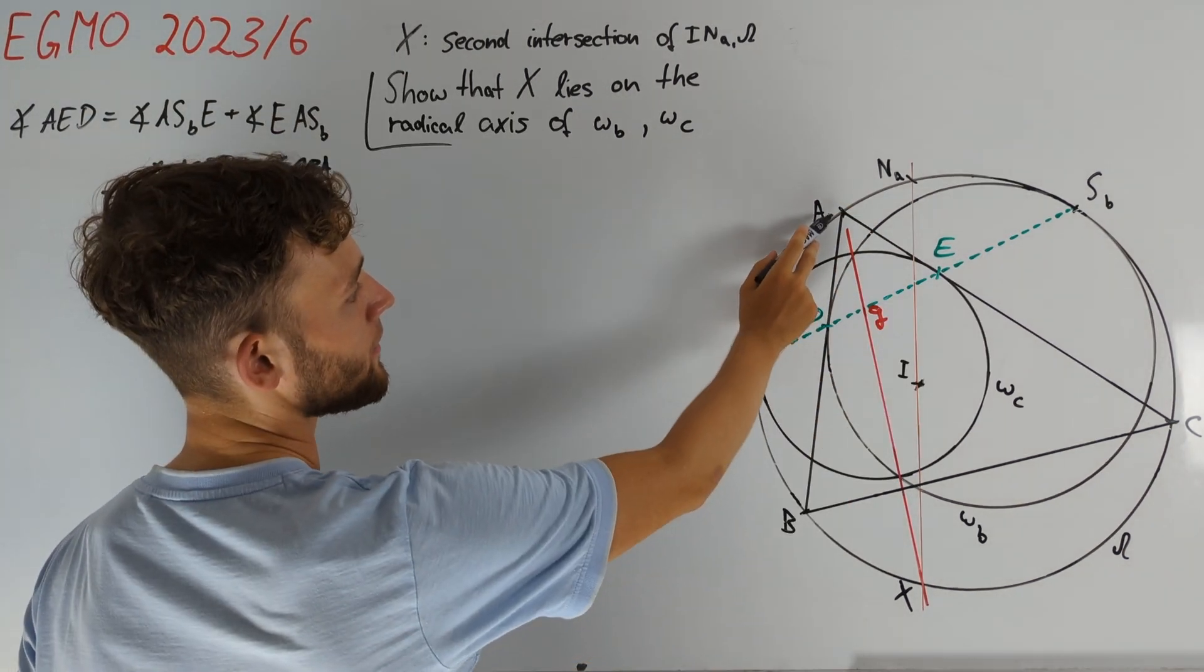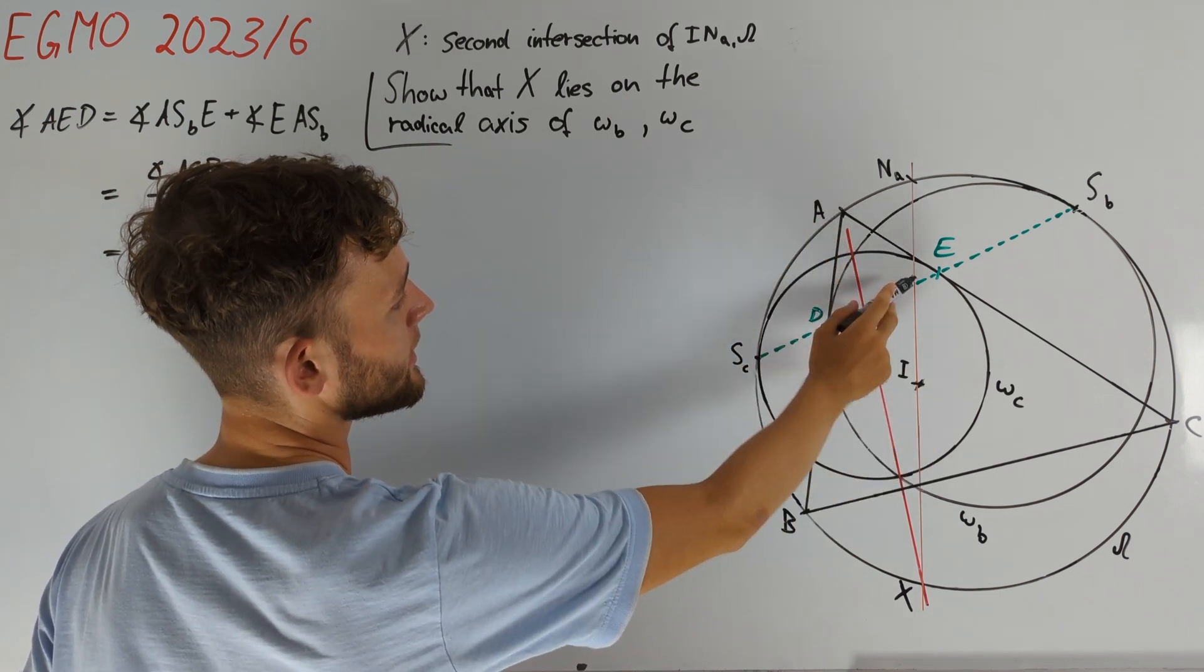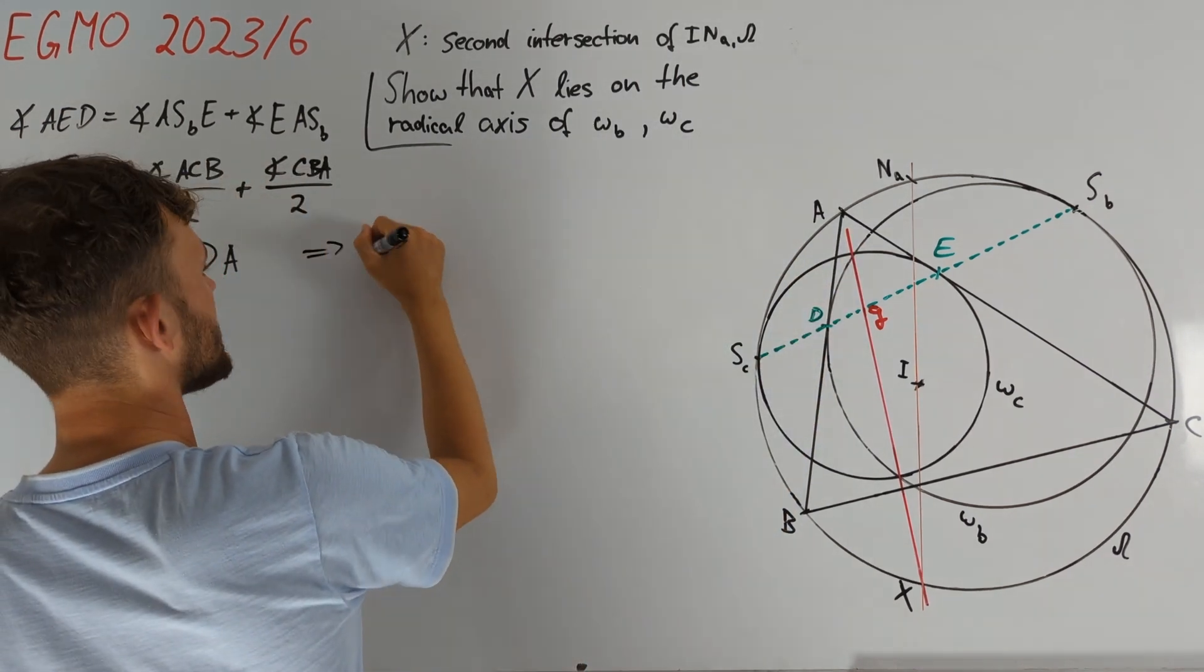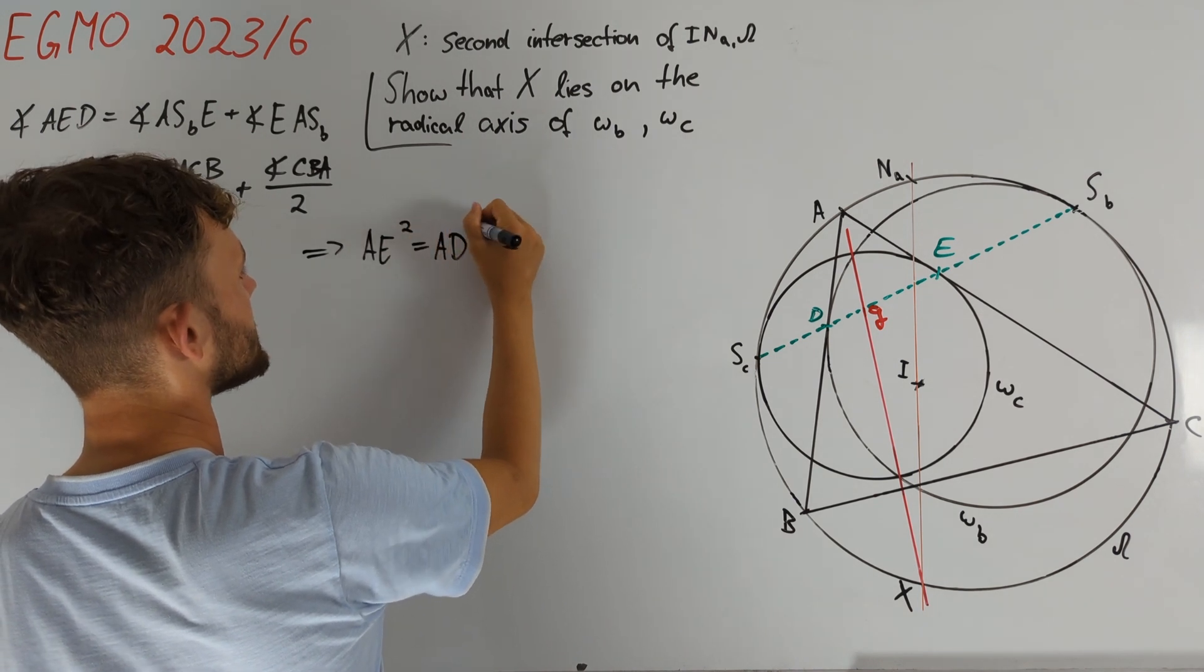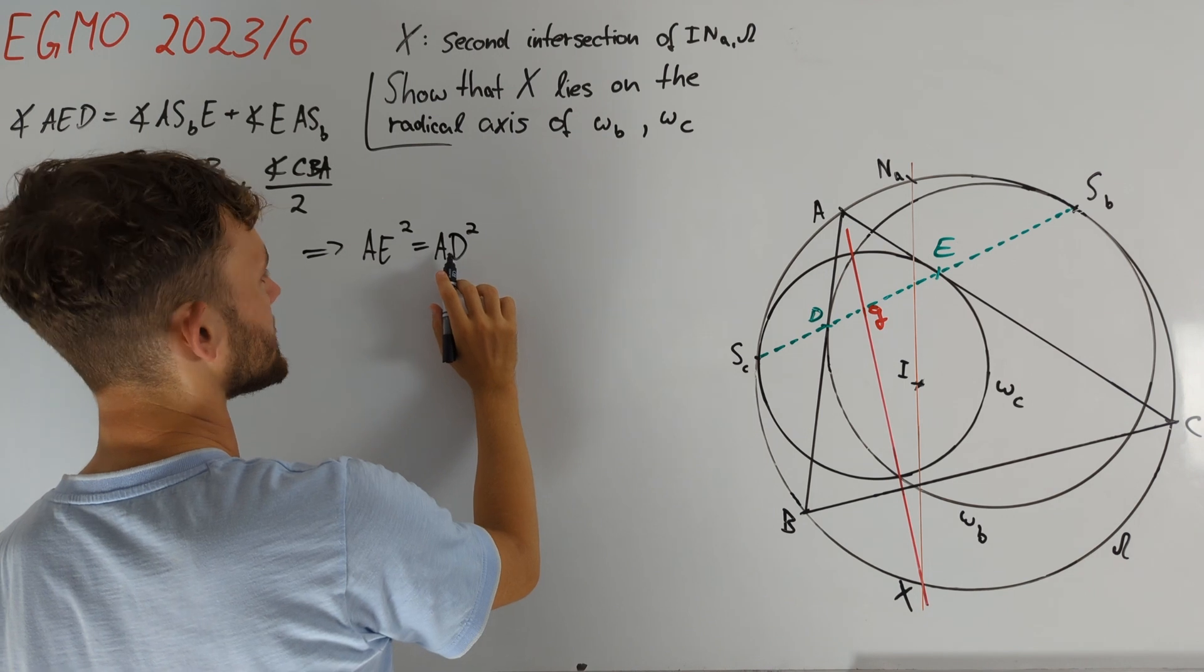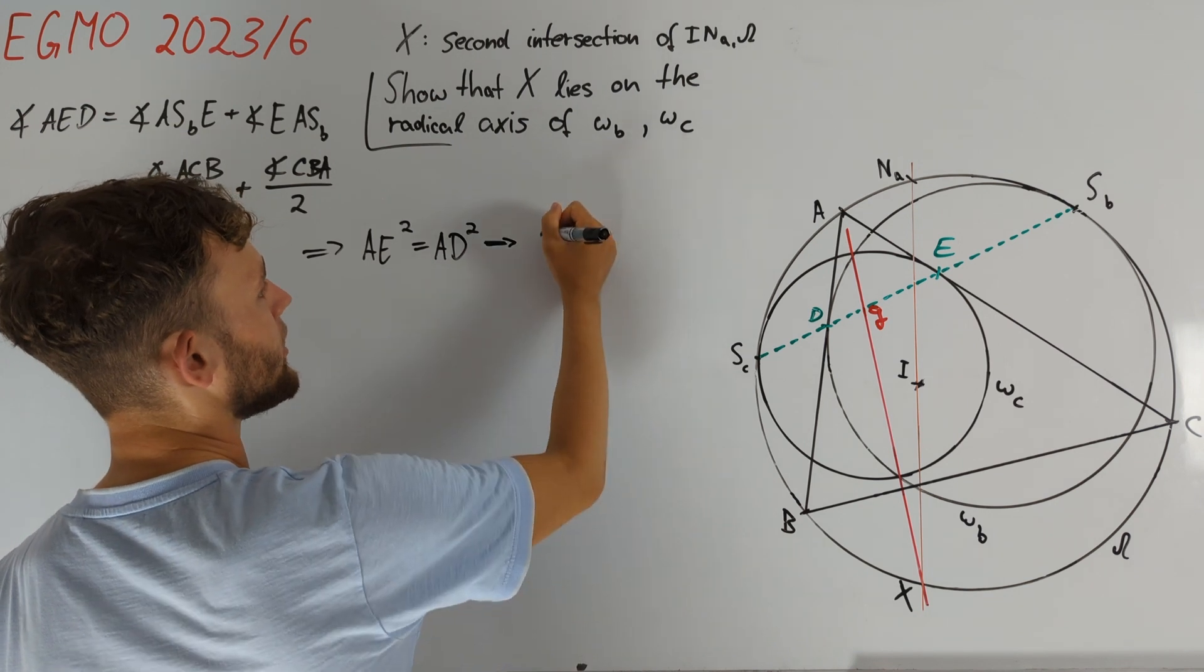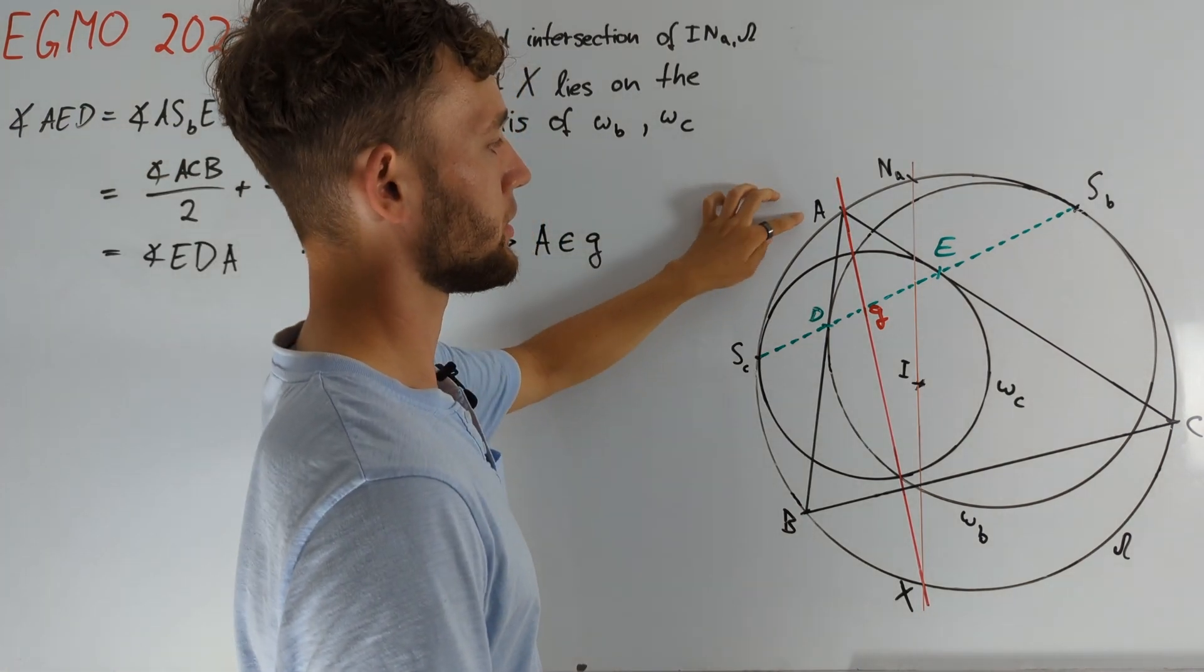In particular, the length of the tangent of A to circle omega_C, which is just AE, is equal to the tangent length of A to omega_B. And we write this down as AE squared equals AD squared, which says nothing but that the power of A with respect to circles omega_B and omega_C are equal. And therefore, A lies on the radical axis G of the two circles. We have thus found our first nice point on G.